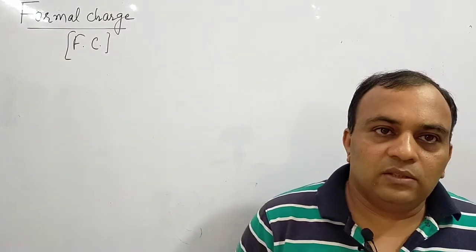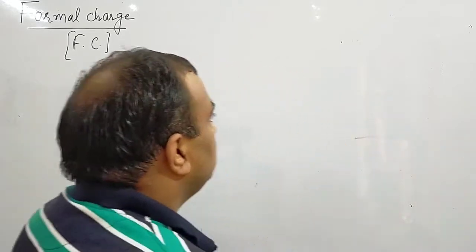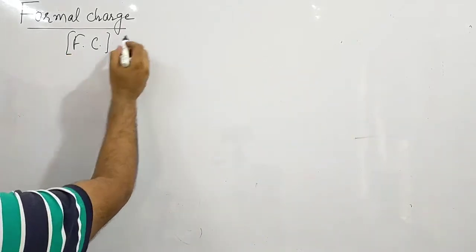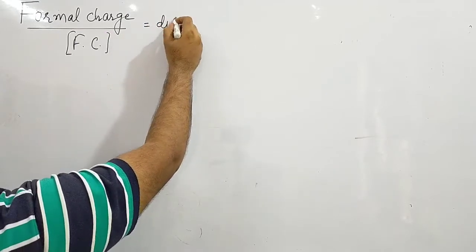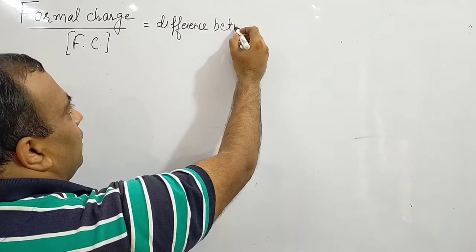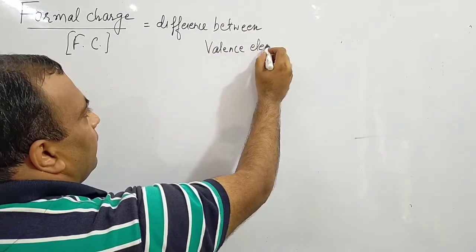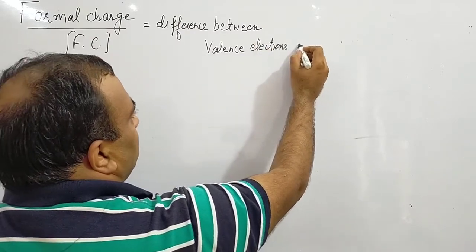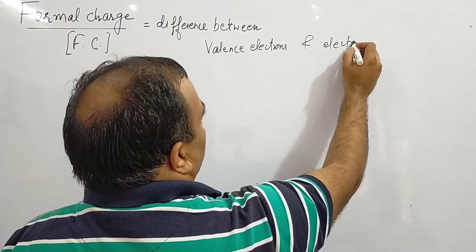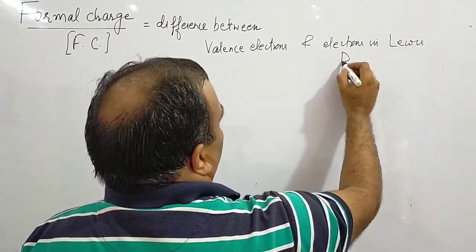Students, today we will discuss the topic formal charge. So what is the formal charge? Formal charge is simply the difference between valence electrons and electrons in Lewis dot structure.